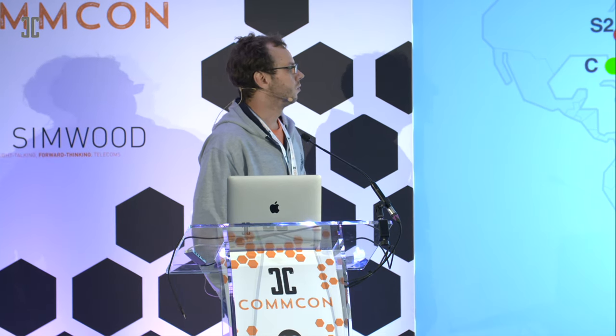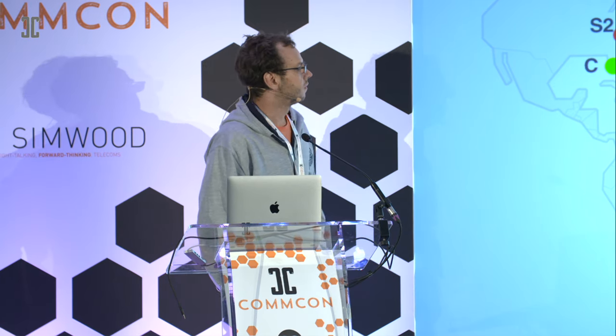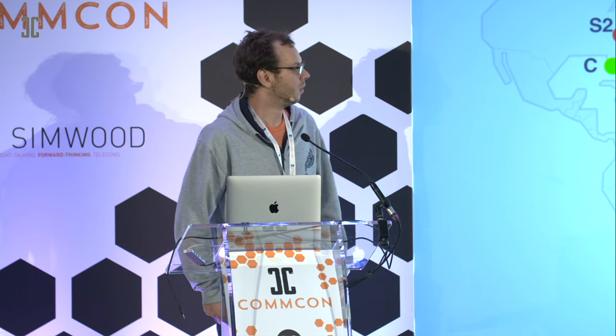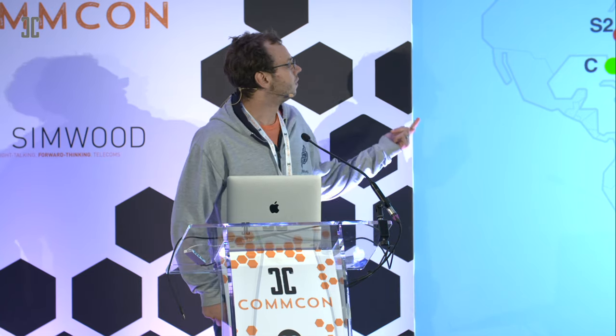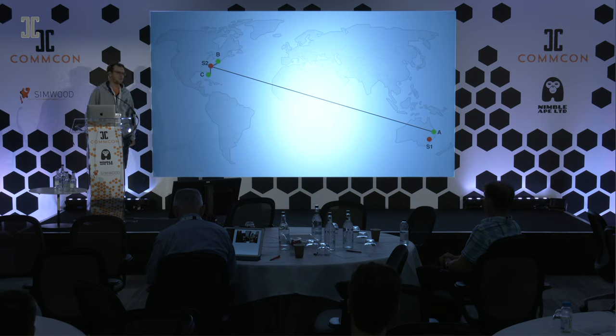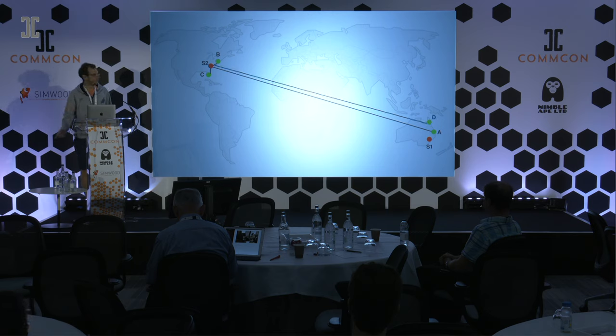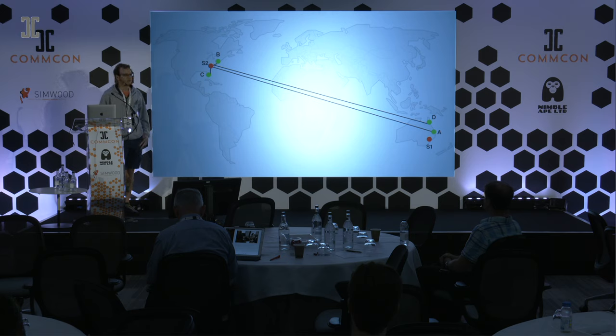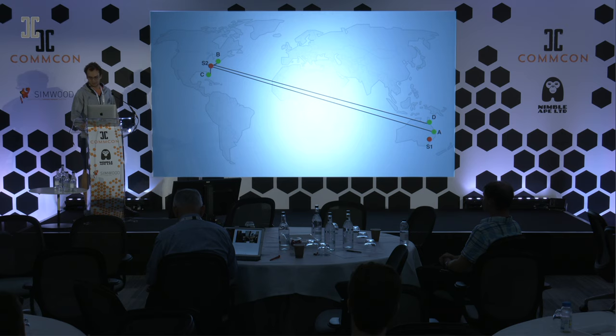One way to solve this problem is to choose a different location for the server. If we put the server in the U.S., the two problems pretty much disappear. The connection from Bob to Alice still has to go through the ocean — we cannot avoid that long round-trip — but we avoided the long round-trip between Bob and Charlie. However, we didn't know Charlie was going to join when we selected the server initially, and if Dana joins in Australia again, we're back with the same problem between Alice and Dana.